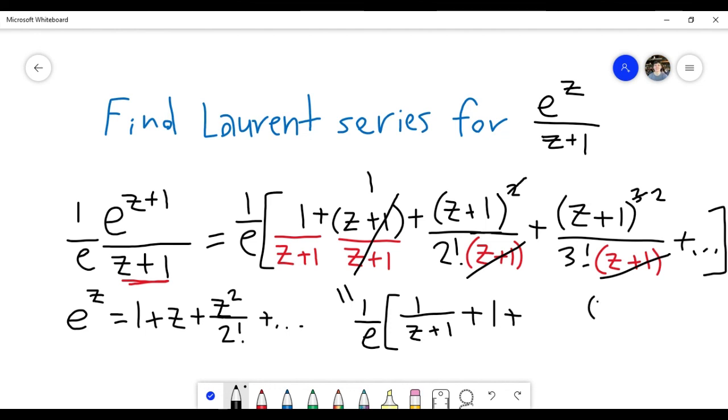And so everything here has the form z plus 1 to the n, and then divided by n plus 1 factorial. And then this is going from n equals 1 to infinity, because this is z plus 1 to the 1st power, z plus 1 to the 2nd power, and then so on.